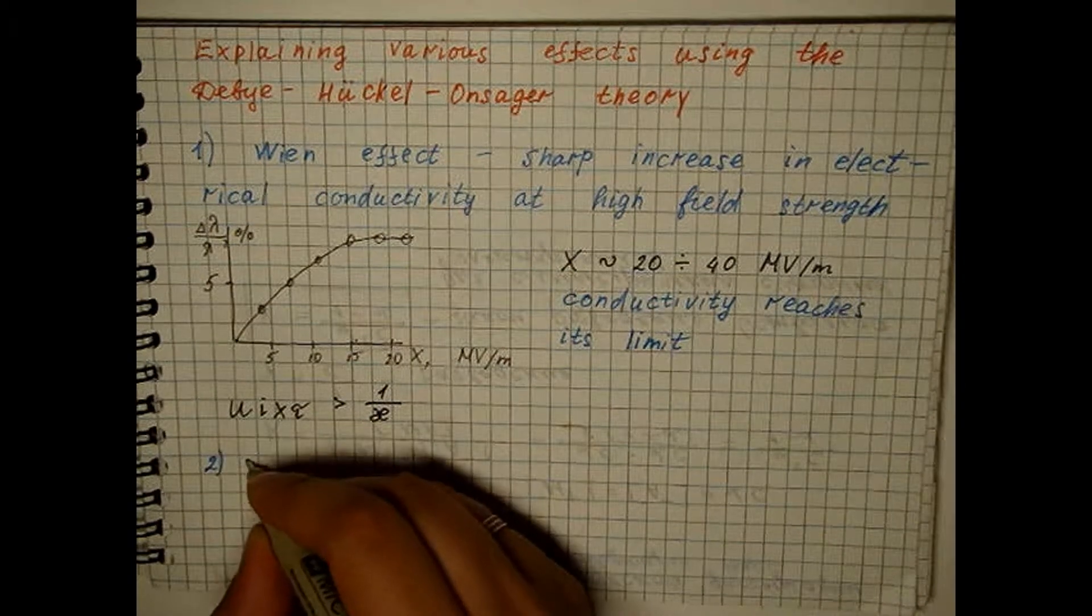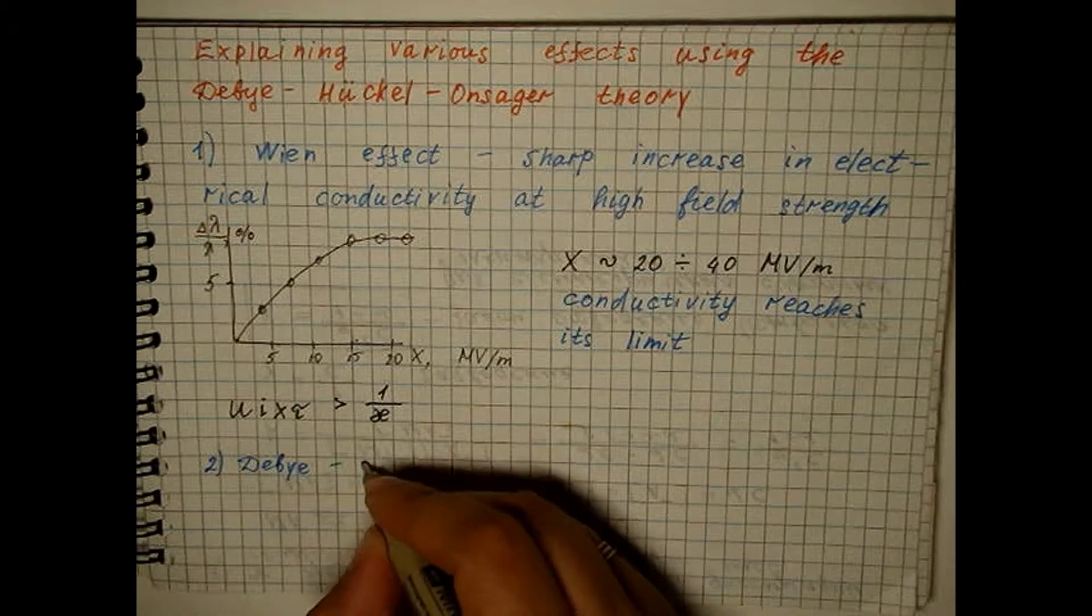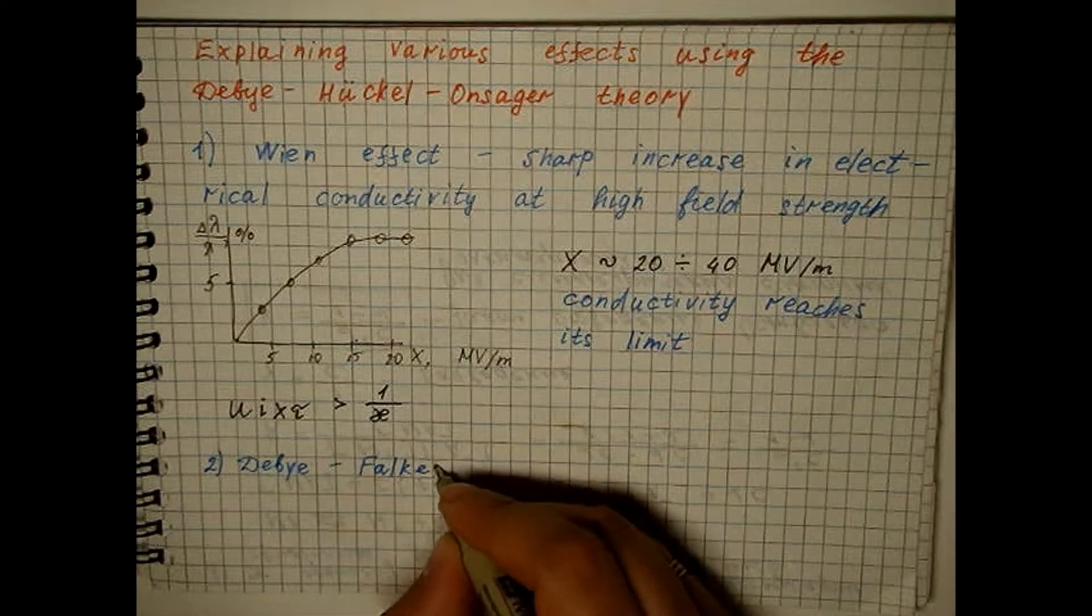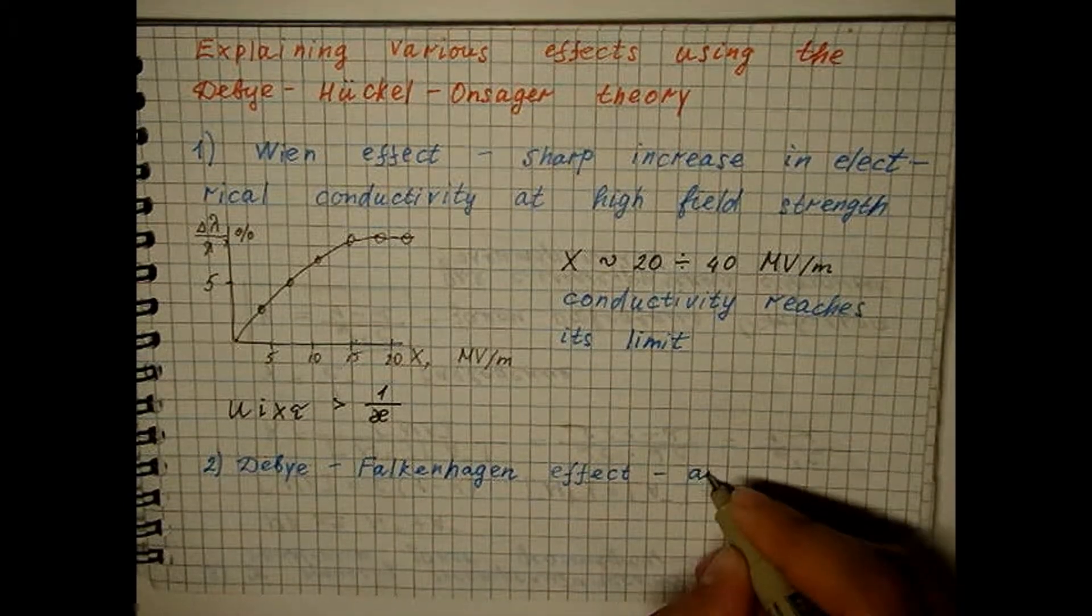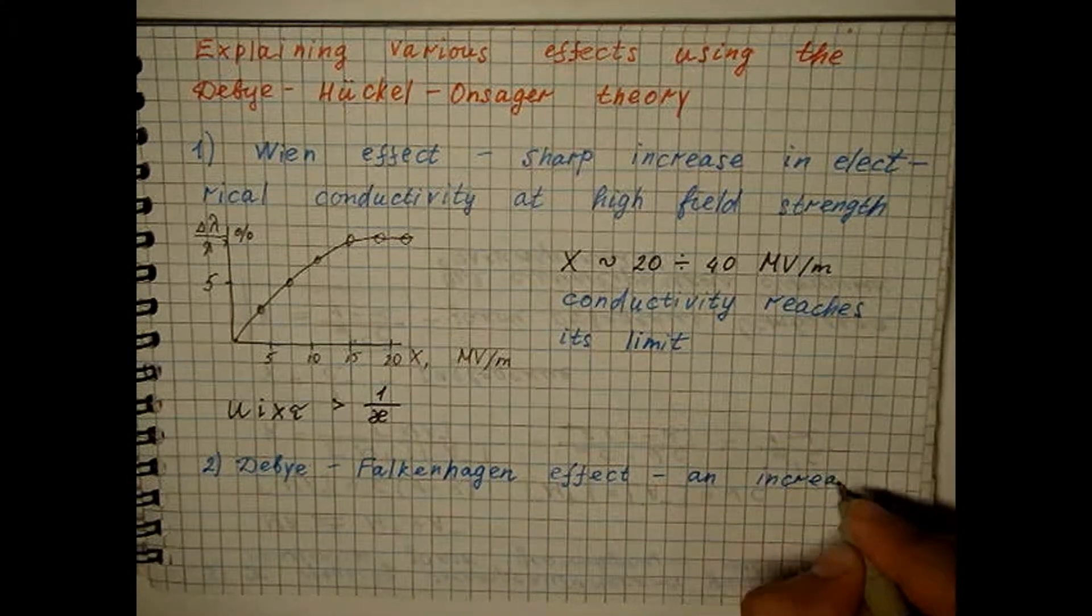The second effect, an increase in the equivalent electrical conductivity at very high frequencies of alternating current was predicted by Debye and Falkenhagen on the basis of the Debye-Hückel-Onsager theory.